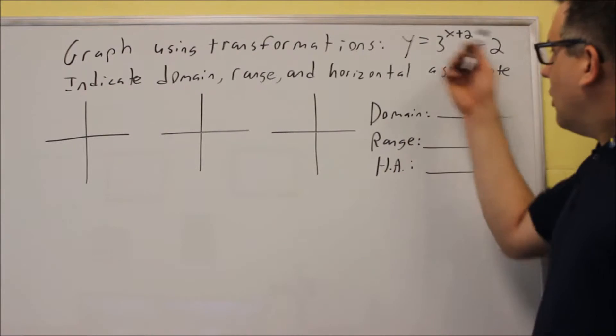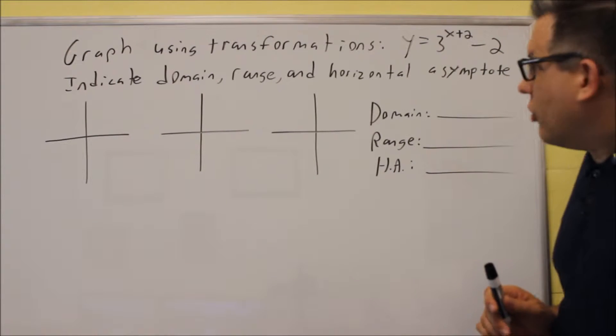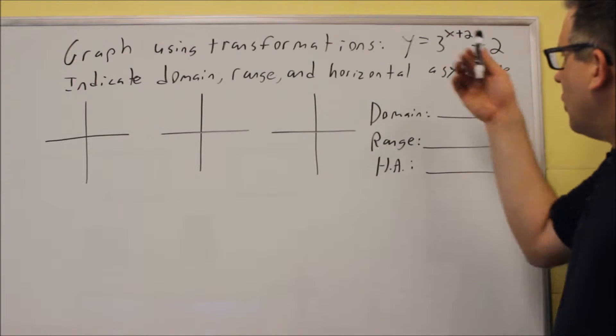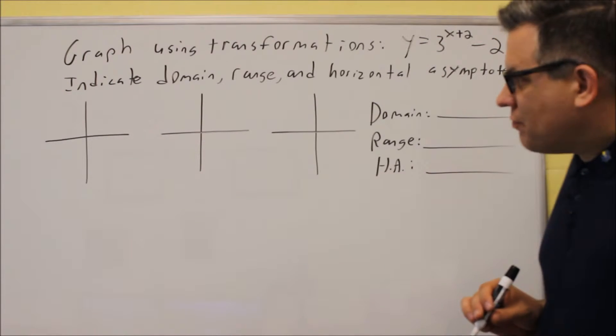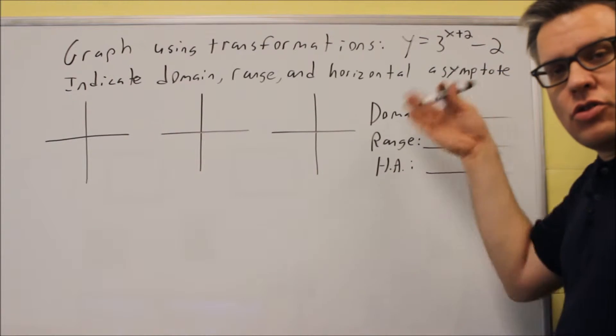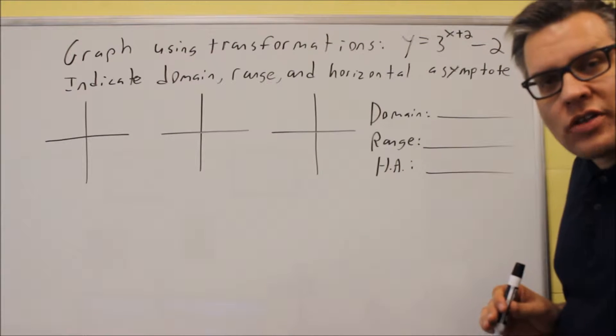Now let's look at an equation that has a couple different transformations going on. So in fact, this one, we're going to do two different transformations. Still asking for the same information, domain, range, and horizontal asymptote.